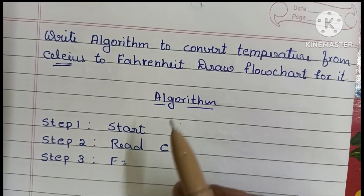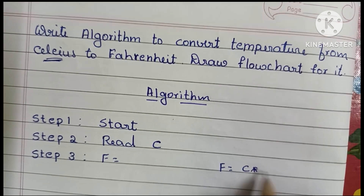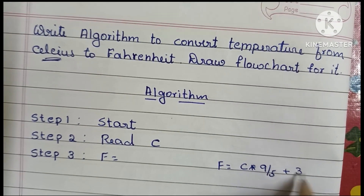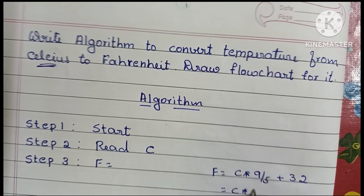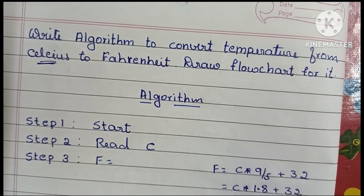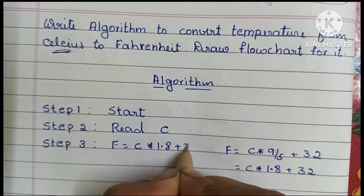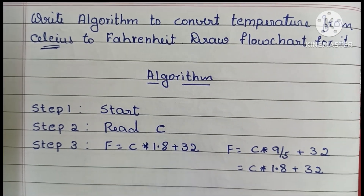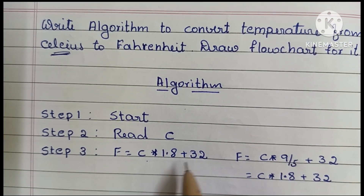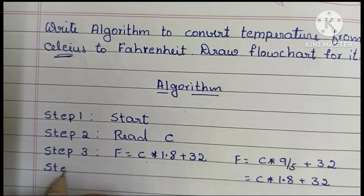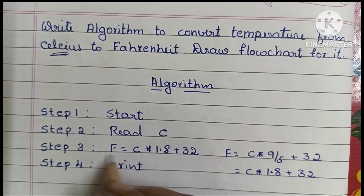Step 3: we have to calculate the Fahrenheit value. The formula to convert Celsius to Fahrenheit is F = C × 1.8 + 32. We can write 9/5 as 1.8, so the formula is F = C × 1.8 + 32.